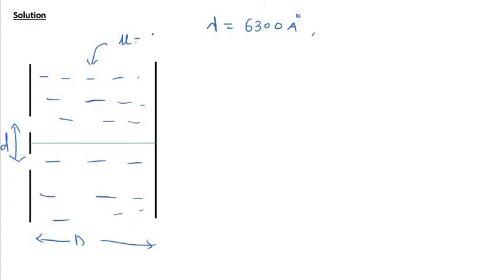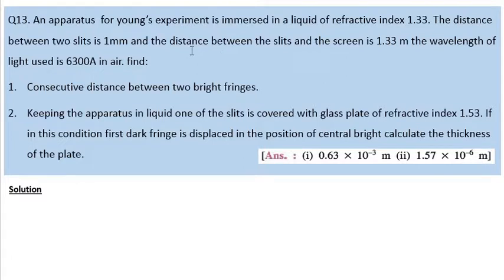The given parameters are lambda as 6300 angstroms and the entire setup is inside the liquid. Let us draw this - this distance is small d, this distance is capital D. The refractive index is 1.33, so this is clearly water. Small d is 1 mm and capital D is 1.33 meters.